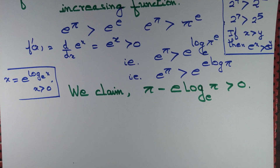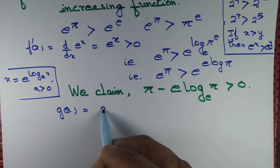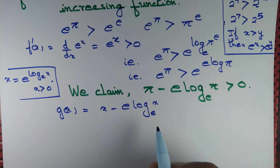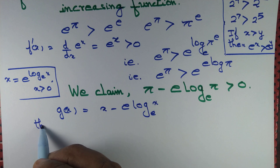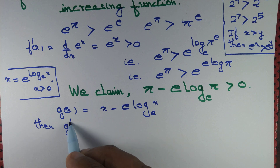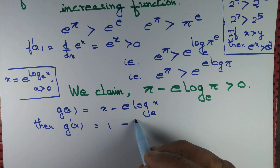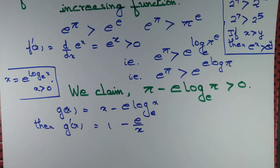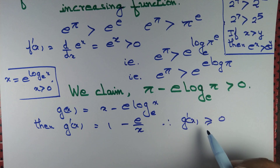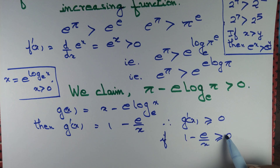We start by defining another function g(x) = x minus e times log x, where log is with base e. We claim that g is monotonically increasing. Computing the derivative: g'(x) = 1 minus e times (1/x), so g'(x) is greater than or equal to zero when 1 minus e/x is greater than or equal to zero.